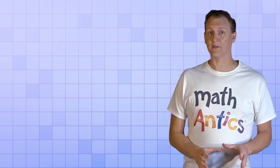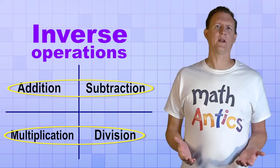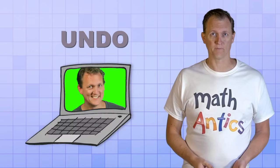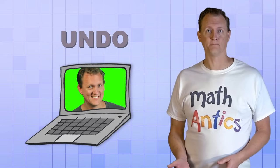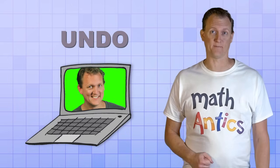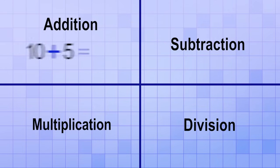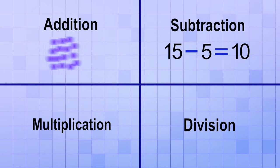Another important thing you need to know about these arithmetic operations is that they form pairs that are called inverse operations. A good way to understand what an inverse operation is, is to think of the undo feature on a computer. If you do something on a computer, there's usually a way to undo it or to go back the way it was before. In math, inverse operations are like that. Addition and subtraction are inverse operations — what one does, the other undoes. If you add 5 to 10 to get 15, you can undo that operation by taking 15 and then subtracting 5 from it to get back to the original 10. It's like give and take — addition gives and subtraction takes.